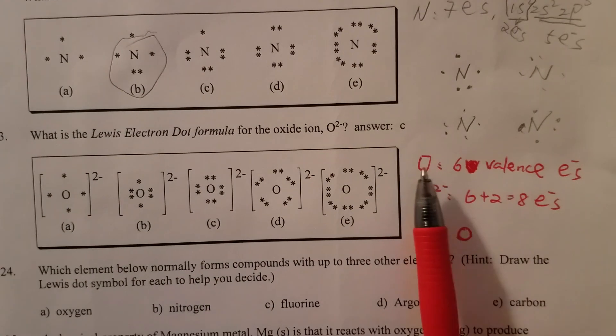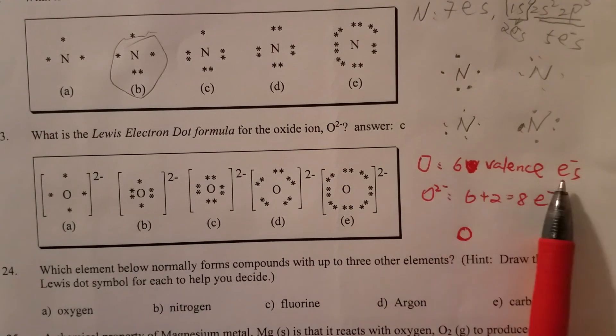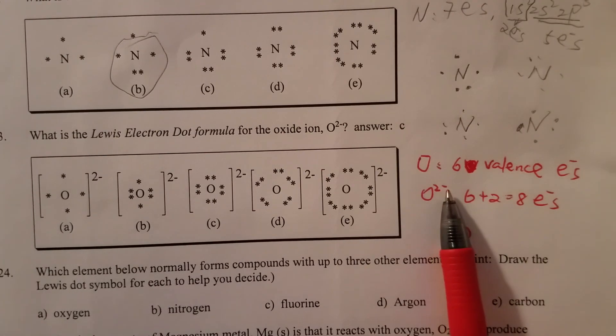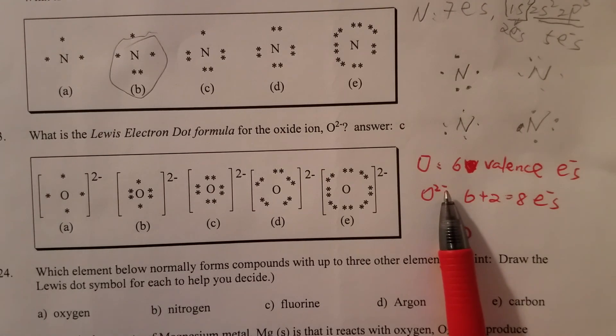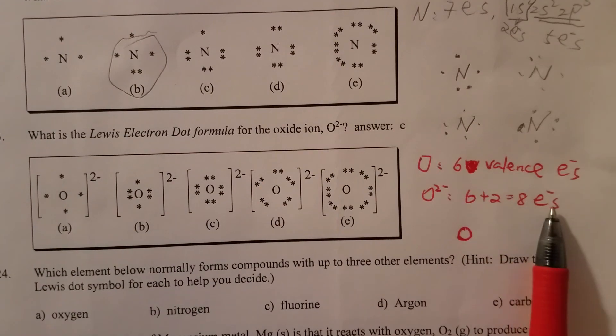We just mentioned, so oxygen atom should have 6 valence electrons, and then gained 2 more, that's why minus 2, so 6 plus 2 equals 8 electrons.